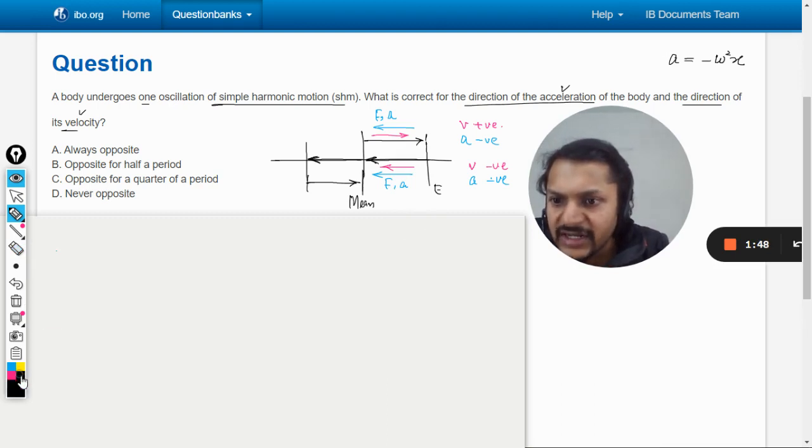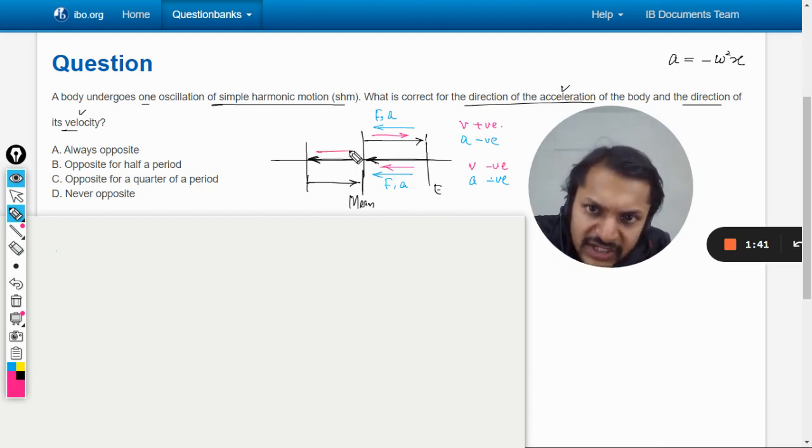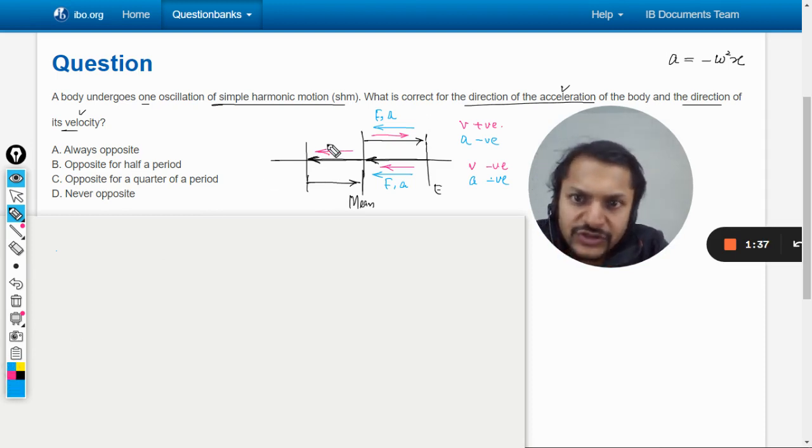Now similarly, let's move to the other part, the third part. The velocity is now towards left and the restoring force is backwards. I would be a little quicker here now. So the acceleration becomes positive but the velocity is negative.